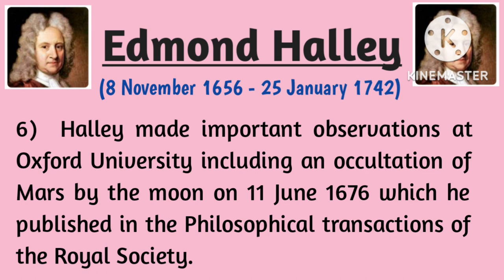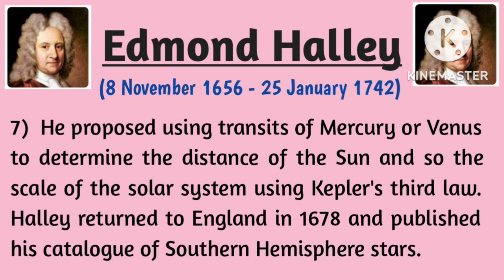Halley made important observations at Oxford University, including an occultation of Mars by the Moon on 11 June 1676, which he published in the Philosophical Transactions of the Royal Society. He proposed using transits of Mercury and Venus to determine the distance of the Sun and the scale of the solar system using Kepler's third law.